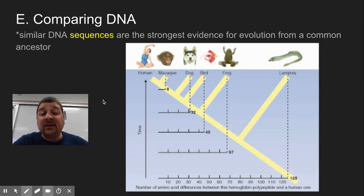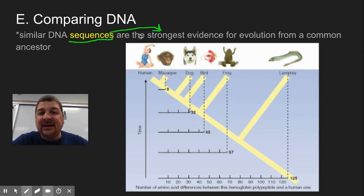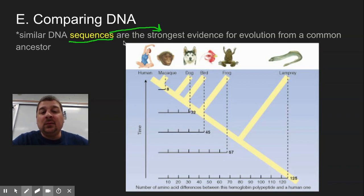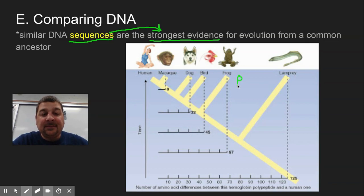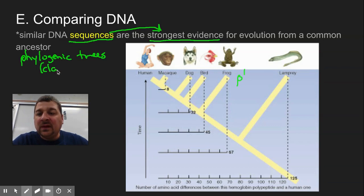Another thing we use as evidence for evolution is similar DNA sequences — a more modern one. This obviously wasn't used by Darwin because we didn't know about DNA back in the 1800s. But today we can sequence different genomes or different proteins and look at how similar they are, which provides very strong evidence for common ancestors. We can set up phylogenetic trees and cladograms, which we'll discuss in class.